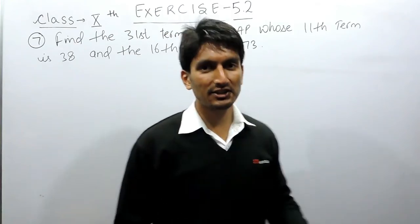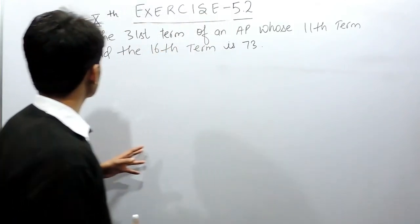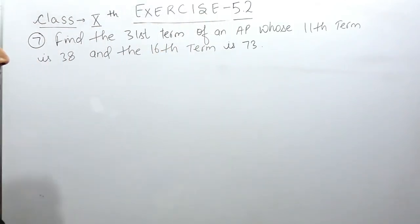Hello everyone, in this video we are going to solve question number 7 of exercise 5.2. The question says you have to find the 31st term of an AP whose 11th term is 38 and 16th term is 73.